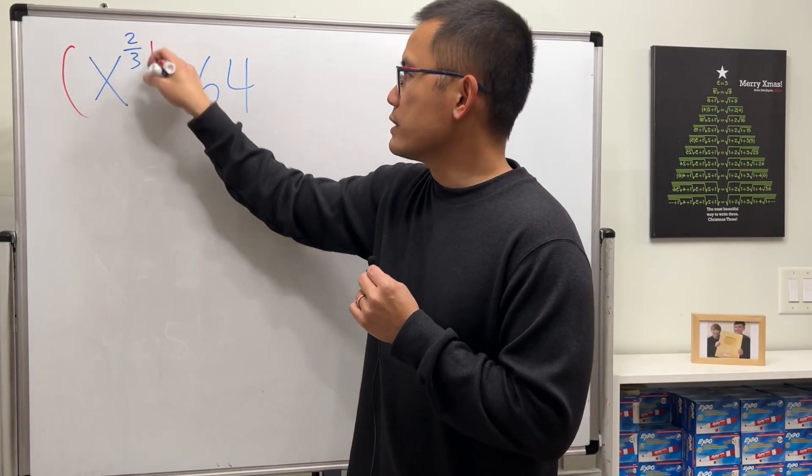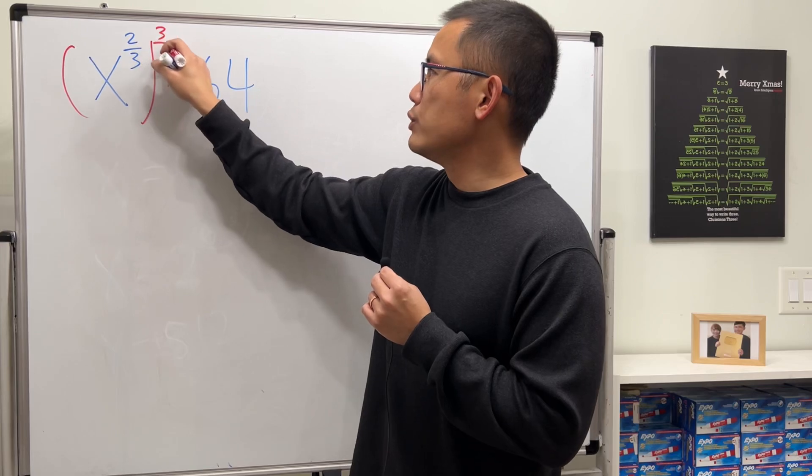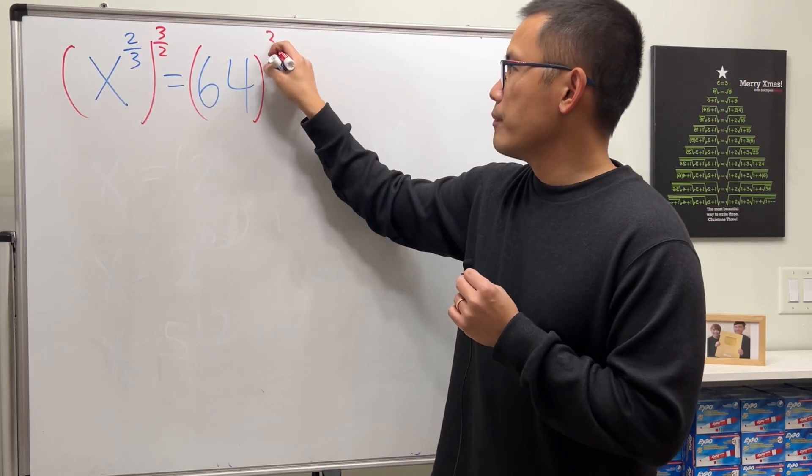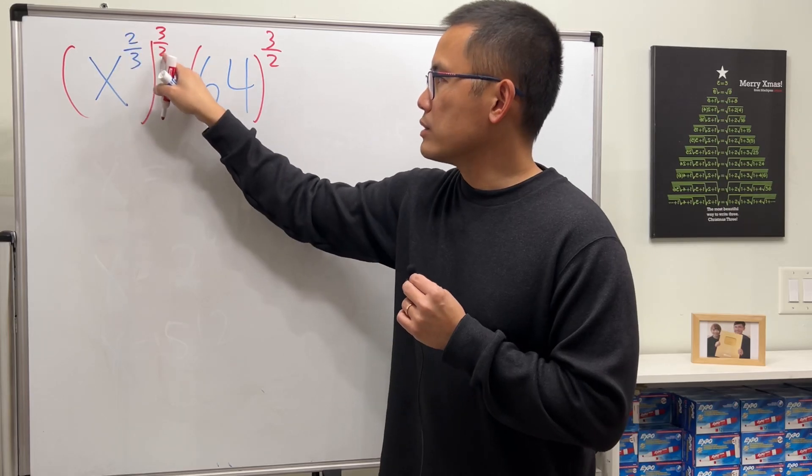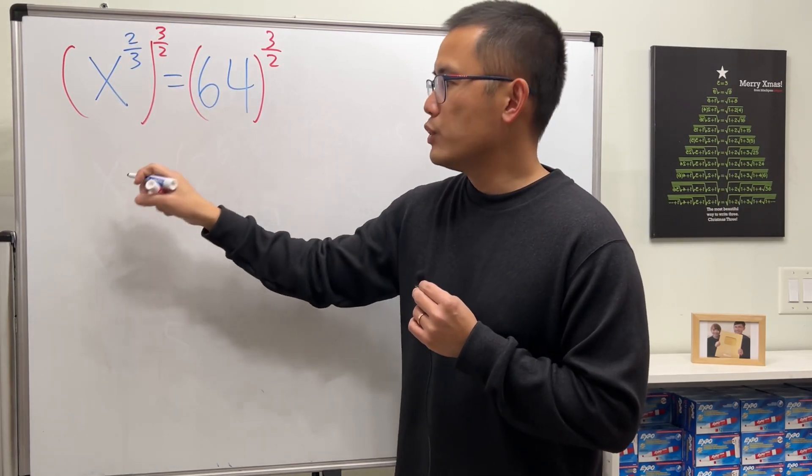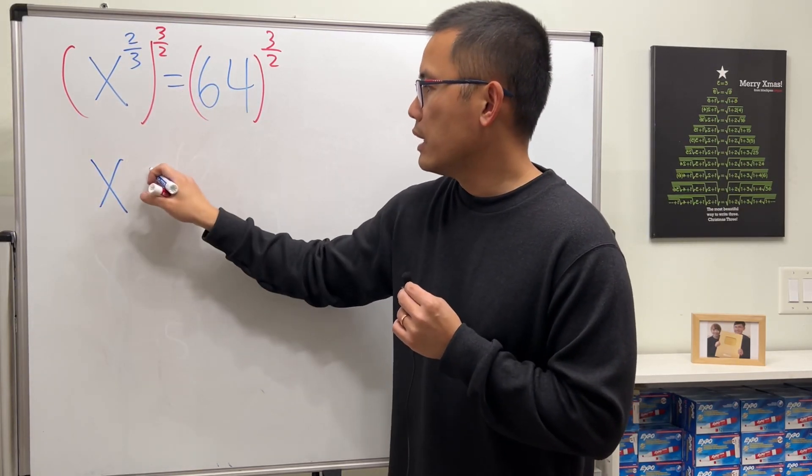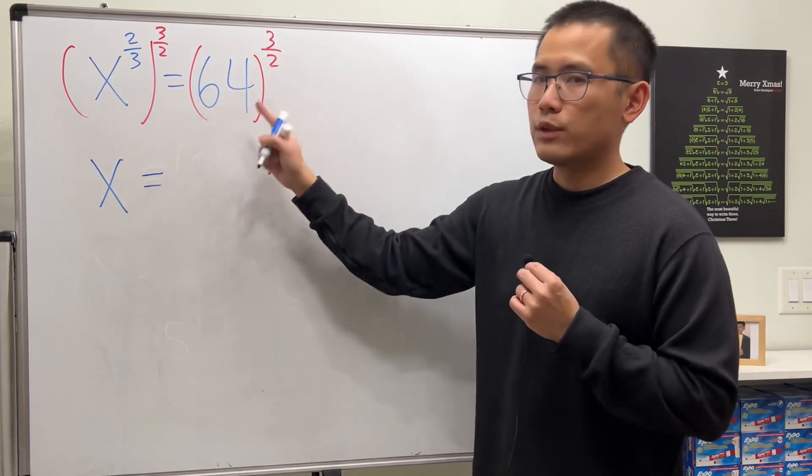Well, if we raise both sides to the reciprocal power, which is 3 over 2, when we multiply the powers, 2 and 2 cancel, 3 and 3 cancel, so we just get x to the first power. And that's equal to... we just have to work this out, right?